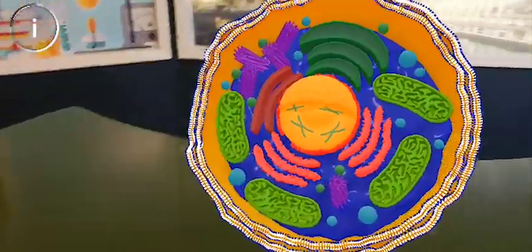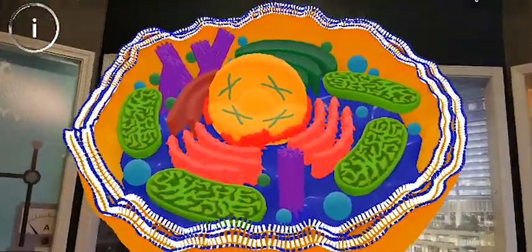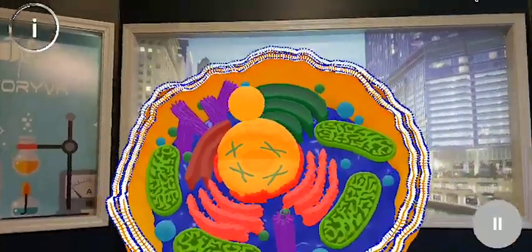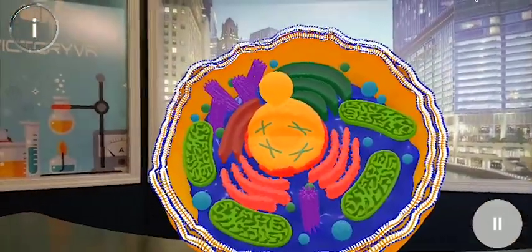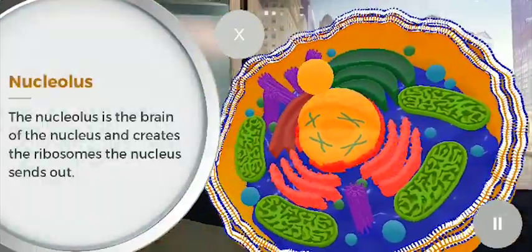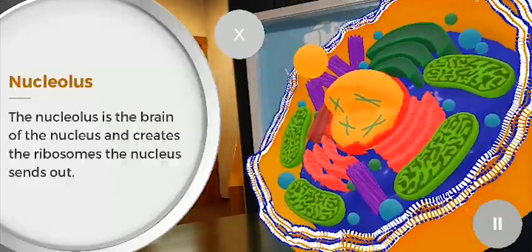Now we're going to look from underneath, down here, and I'm going to press this thing in the middle. If the nucleus is the town hall, the nucleolus is its mayor, creating all of the orders in the forms of ribosomes and sending them out to the rest of the cell.